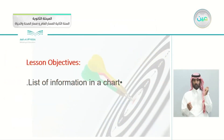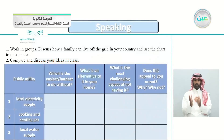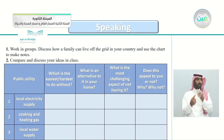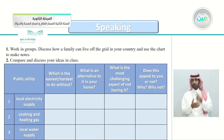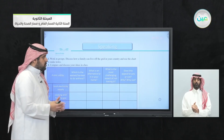Today's objective is to list information in a chart. This is the speaking lesson. Work in groups, discuss how a family can live off the grid in your country, use the chart to make notes, then compare and discuss your ideas in class.